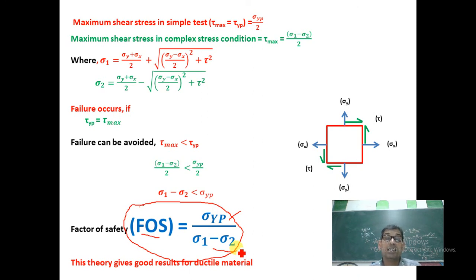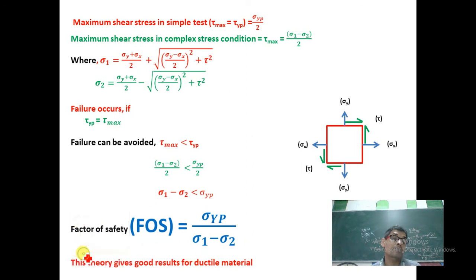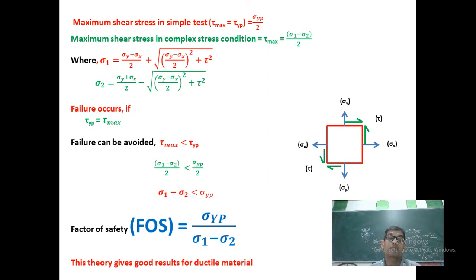So that was the first theory (Rankine Theory) with FOS = sigma_yp / sigma_1, and the second theory (Guest Stress Theory) with FOS = sigma_yp / (sigma_1 - sigma_2). In the next lecture, we will discuss the remaining three theories — Maximum Principal Strain Theory, Maximum Strain Energy Theory, Maximum Shear Strain Energy Theory — and then solve numericals based on all theories. Thank you, have a good day.